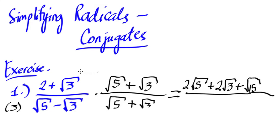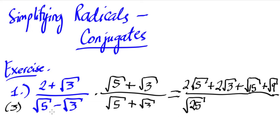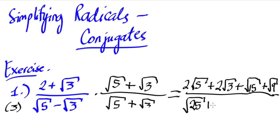For the last term, square root of three times square root of three gives us square root of nine, which is actually just three — but let's write square root of nine for now. For the denominator, square root of five times square root of five gives us square root of 25, which is five. The outer term — square root of five times square root of three — gives us positive square root of 15.